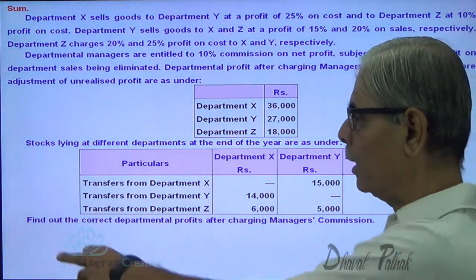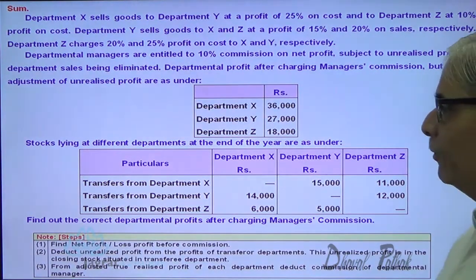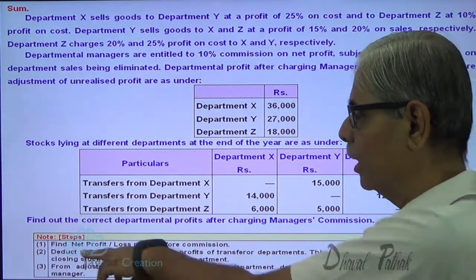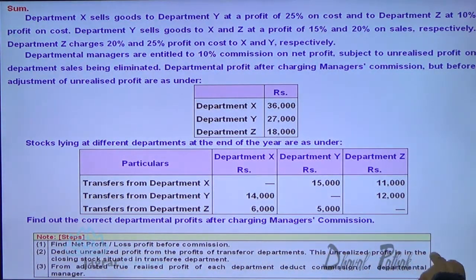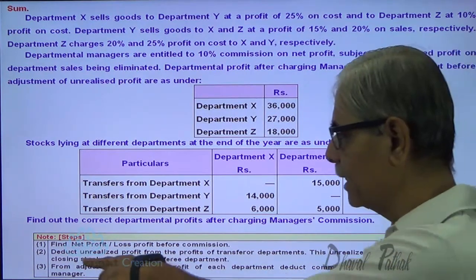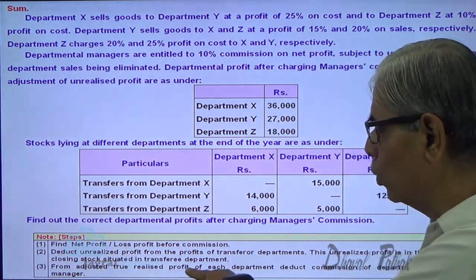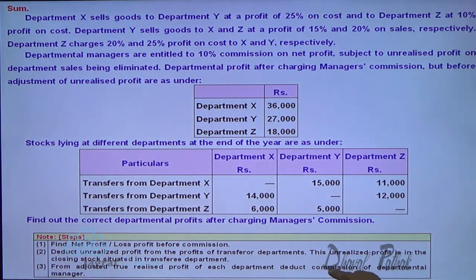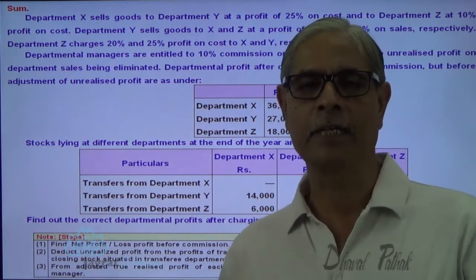Now let us start. Find out the correct departmental profit by charging manager's commission. First step: find out the profit before commission. Find out the real profit — the unrealized profit is in the closing stock of the transferring department, which we adjust. From this adjusted figure, each department deducts the commission of the departmental manager to find out the real profit.